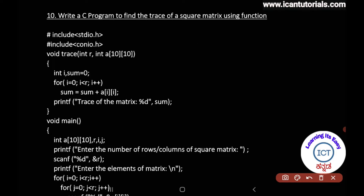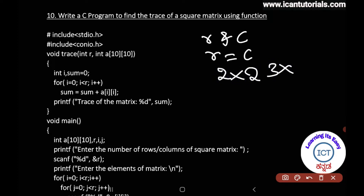The first logic of the program: the matrix has rows and columns. The rows are equal to the columns — that is the square matrix. For example, 2x2 is a square matrix, 3x3 is a square matrix. The number of rows and columns are the same. But 3x4 is a non-square matrix.